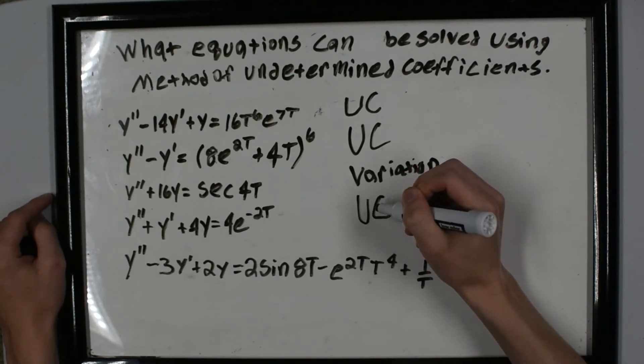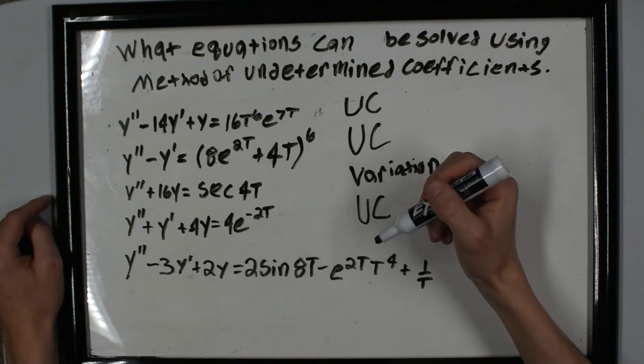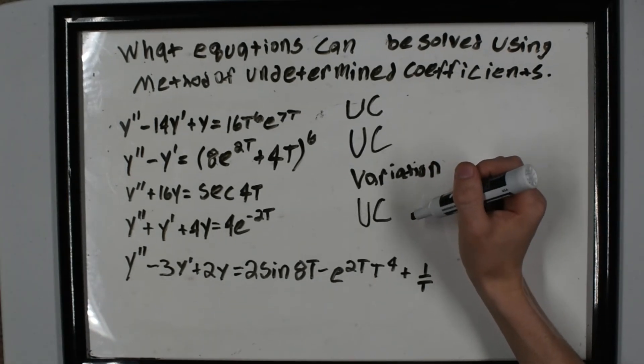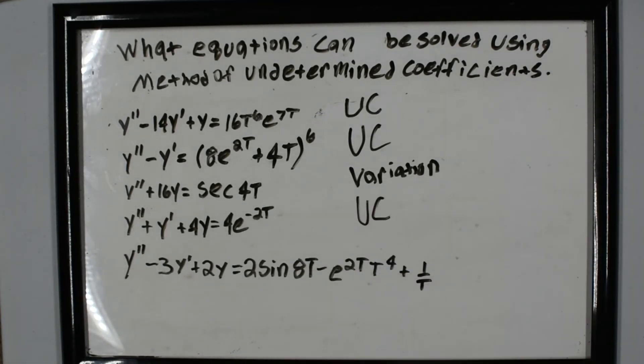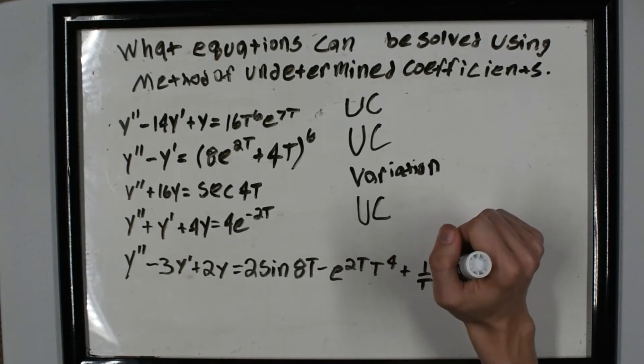In the homework, it has you do one of these where it tells you to use variation of parameters, but you could use undetermined coefficients. Finally, this one—we have three terms over here, and what you need to realize is we can apply superposition.